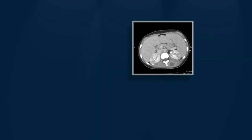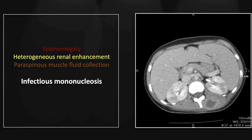Our next case is infectious mononucleosis in a child. There is marked enlargement of the spleen to tip you to the diagnosis. In addition, there are multiple foci of heterogeneous renal parenchymal hypodensity that look for all the world like underperfusion or more likely multifocal pyelonephritis — what this ultimately amounts to is a viral nephritis. An important finding here is a paravertebral soft tissue fluid collection consistent with an abscess, a manifestation of the immune suppression that goes along with EBV infection.